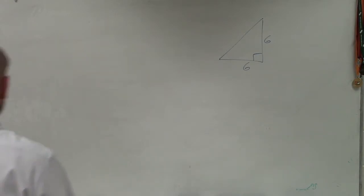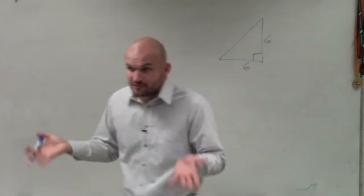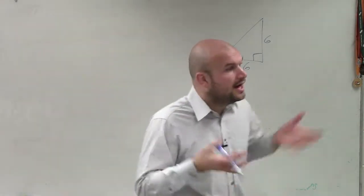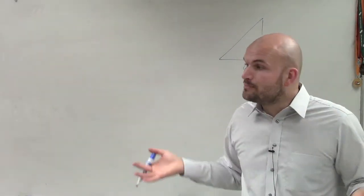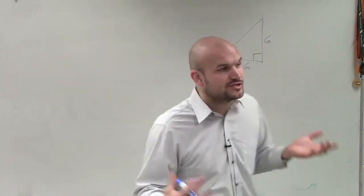On this problem, we're provided a triangle, and they still want us to evaluate for the six trigonometric functions. However, in this problem, we don't have a point that's on the unit circle. We're given this triangle.